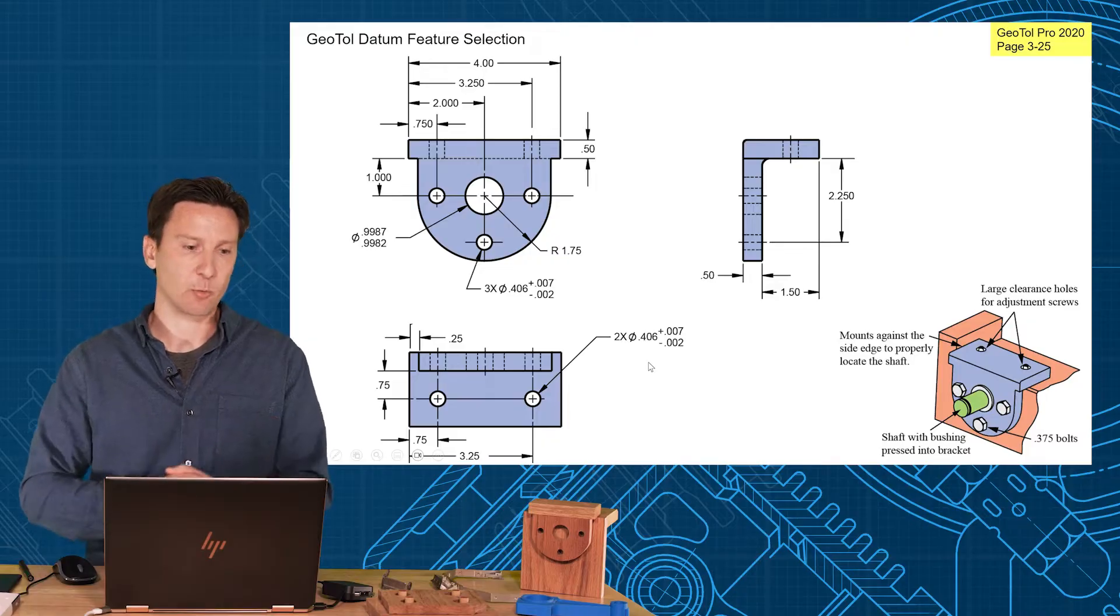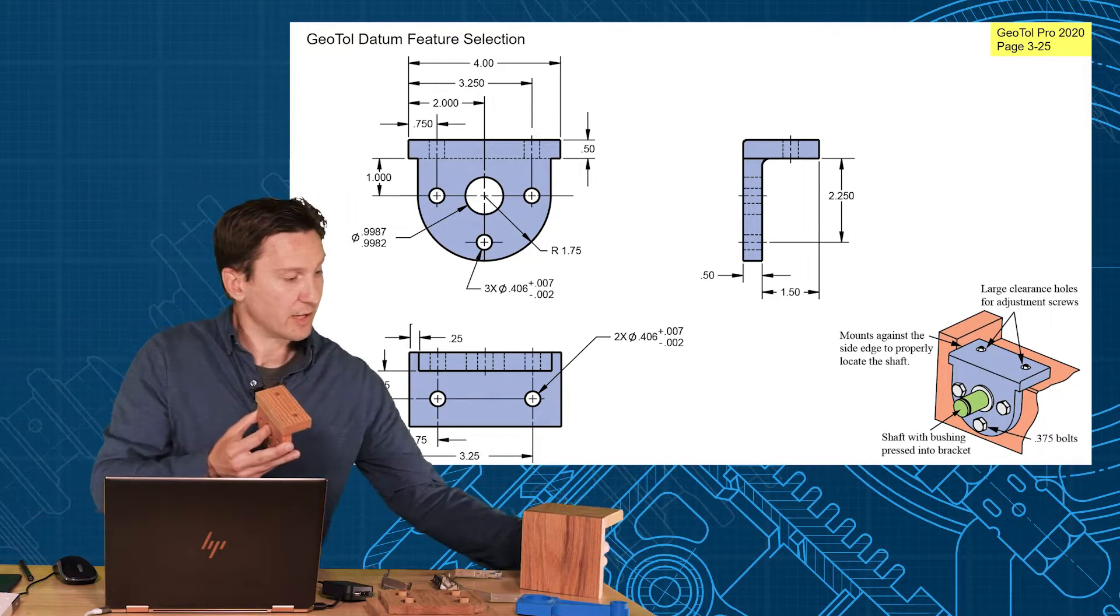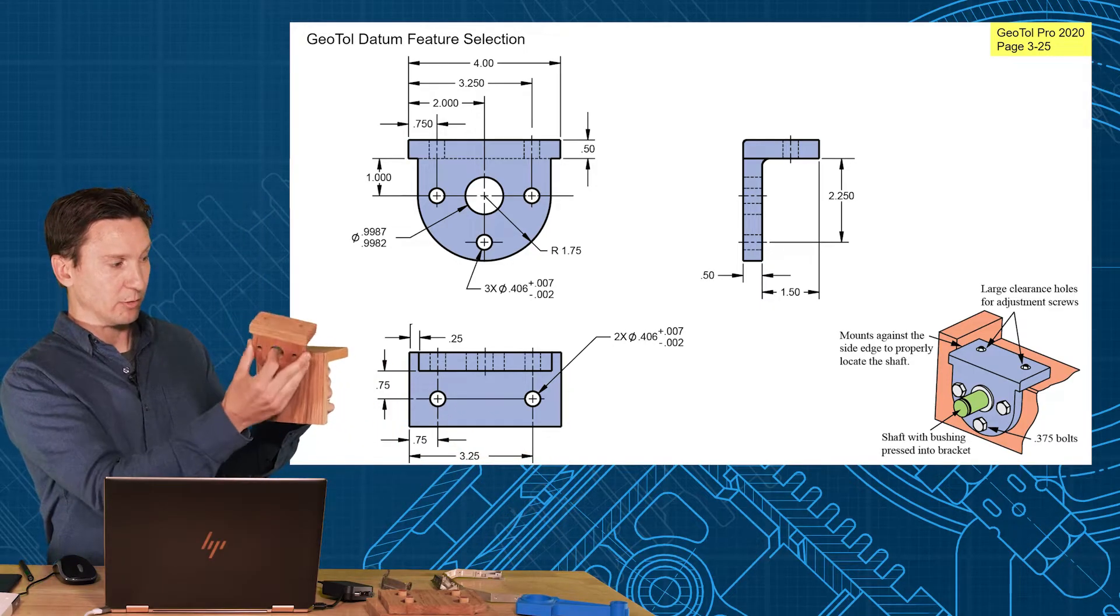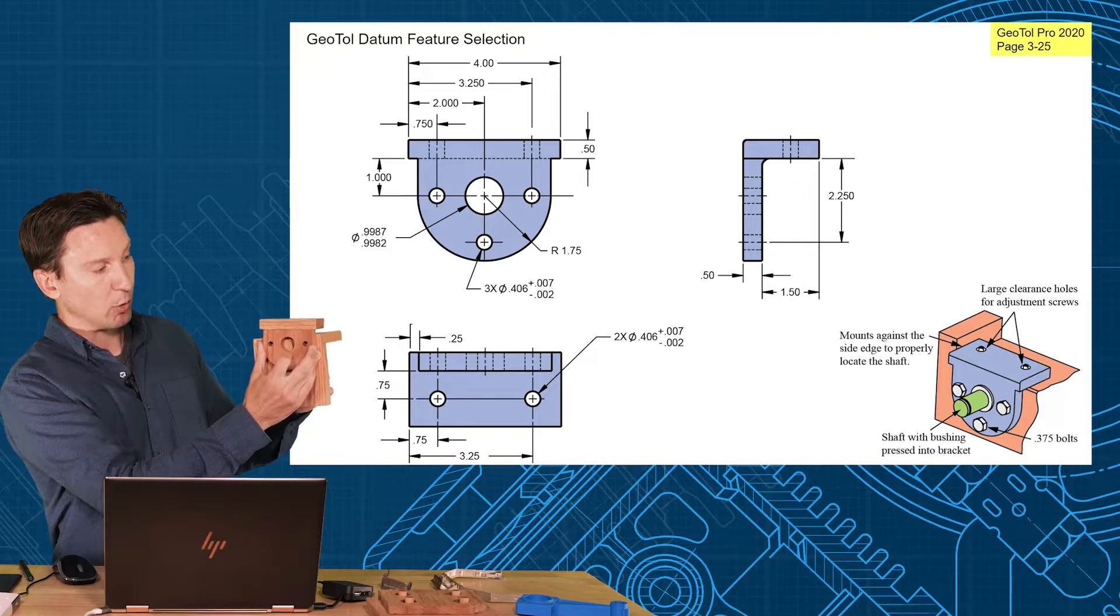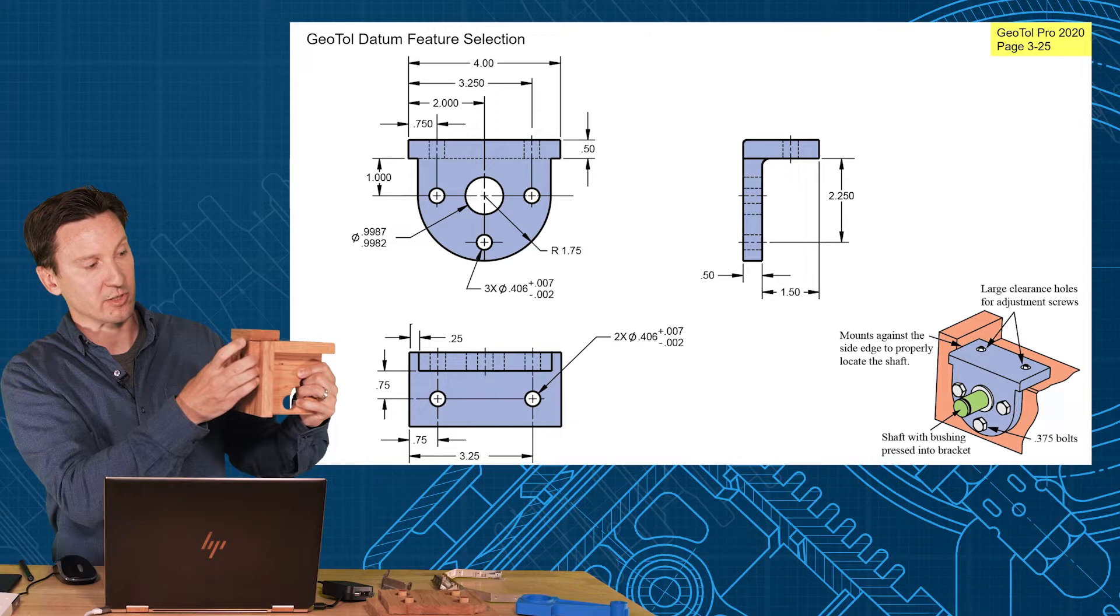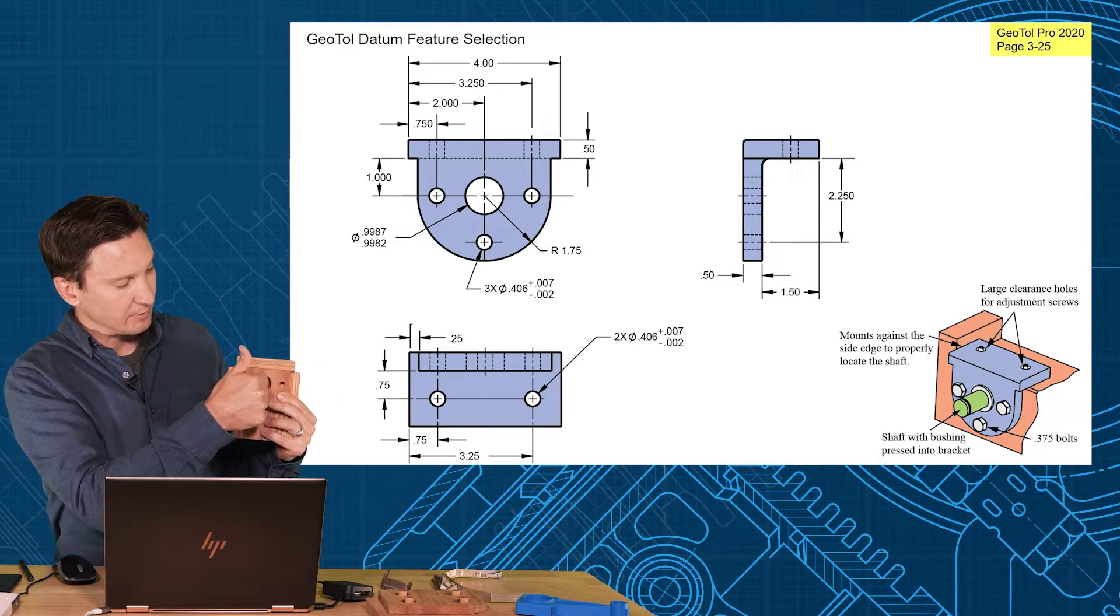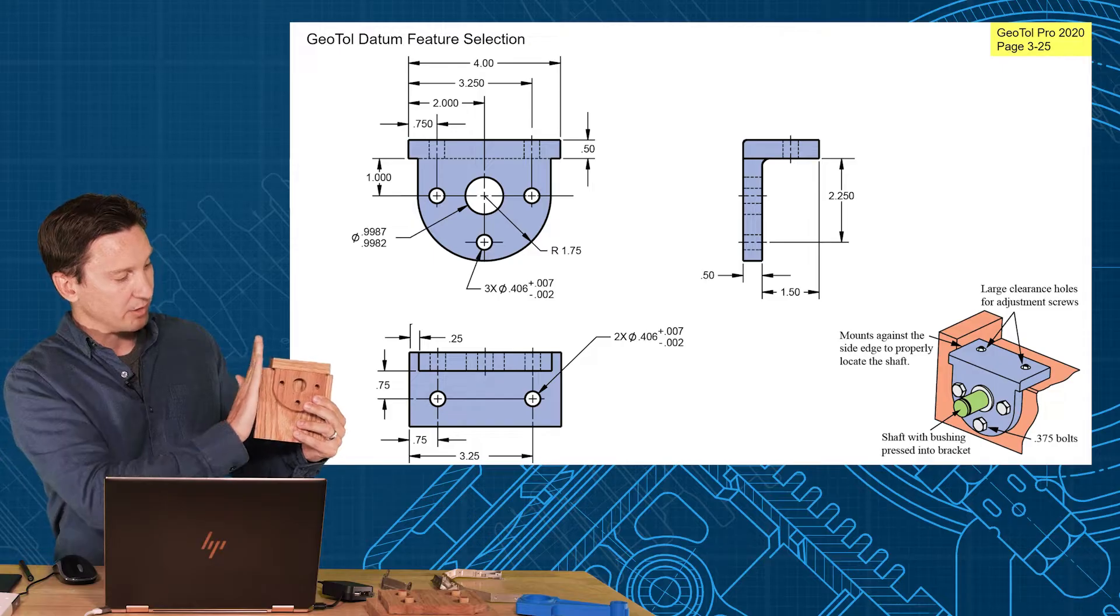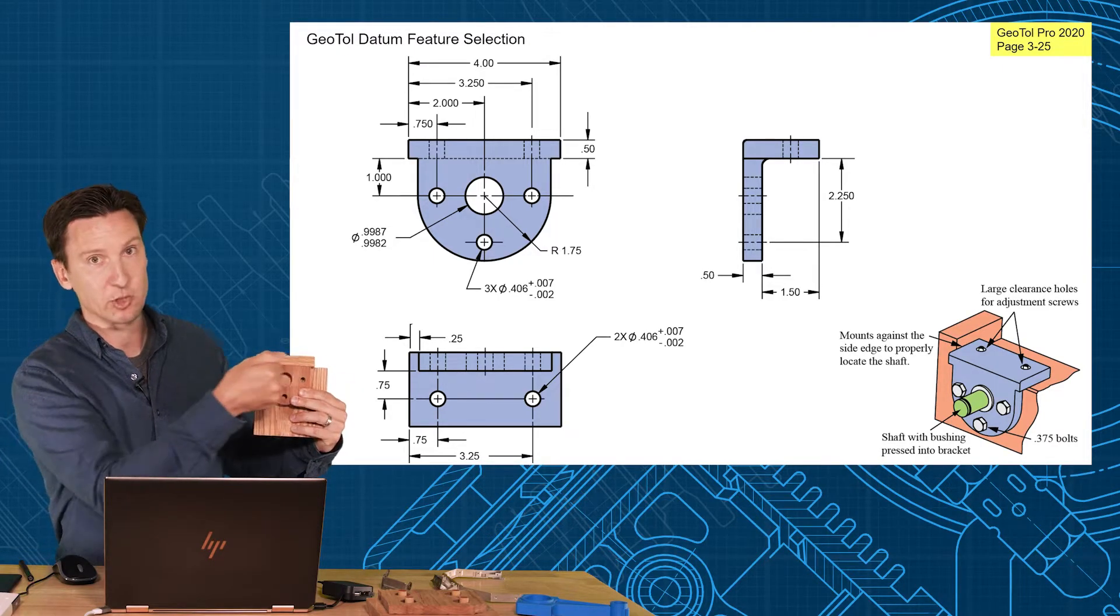Let's look at our first example here—the hanger bracket. Now first let's look at the assembly. How does it fit? The part is going to be mounted up against the back wall, bolted in place. Before it gets bolted in though, it hangs on this underside surface. This hole is for a bushing and a shaft is going to be mating inside. The important thing is this part is pushed up against this side edge to properly locate the shaft left and right.